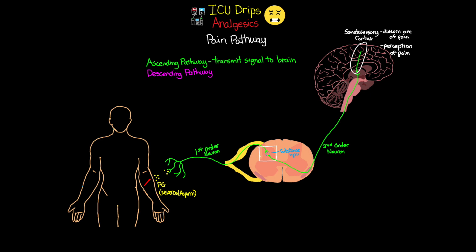Now let's talk about the descending pathway, which is responsible for controlling and inhibiting the ascending pathway. Things begin in the midbrain, where a neuron travels down and synapses in the medulla, and then continues down to synapse in the same dorsal horn of the spinal cord. This neuron is called a serotonergic or noradrenergic neuron.